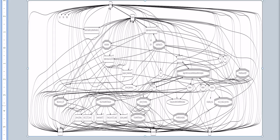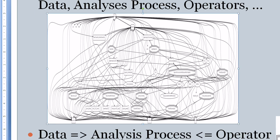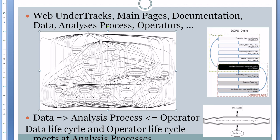And between all these nodes there are a lot of links, but not links from everywhere to everywhere else. It is very useful to have information about data, operators, and analysis processes, but we need some meaning or reason to make each link.